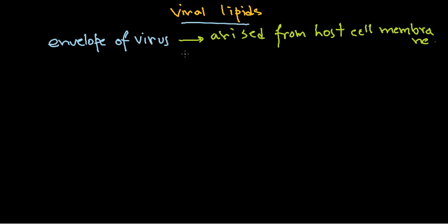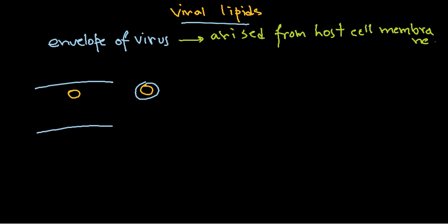The components of the viral envelope will be similar to those found on the host cell surface membrane. The virus takes up that cell membrane depending on the type of viral particle. If the virus is circular in structure, it will take surrounding membrane and become circular. If the virus particle is rod-shaped, it will take a portion of the cell membrane that is rod-shaped accordingly.